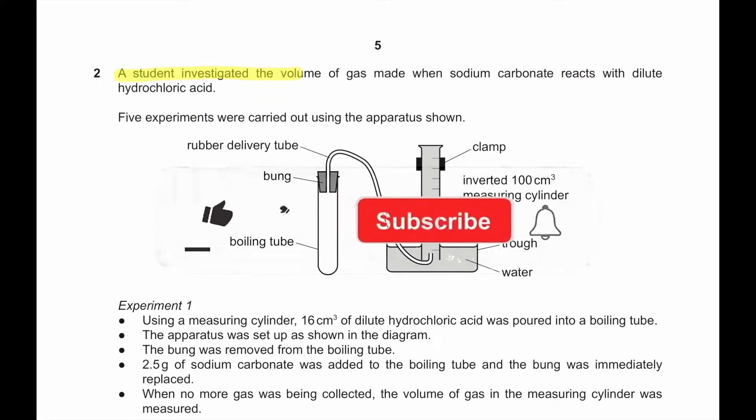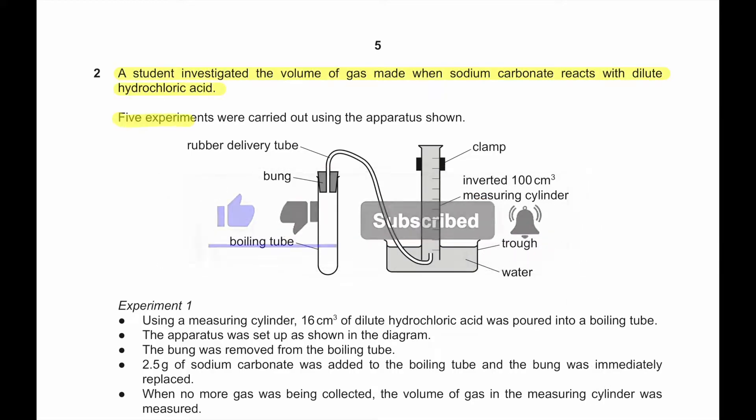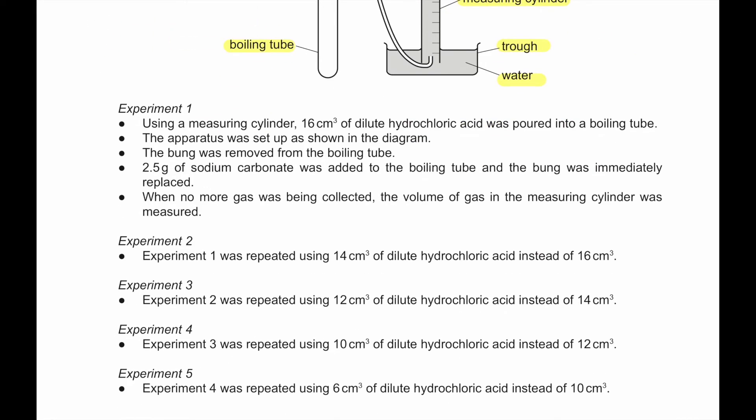Question number 2. A student investigated the volume of gas made when sodium carbonate react with dilute hydrochloric acid. 5 experiments were carried out using the apparatus shown. Rubber delivery tube, there is a bung, then there is boiling tube which is holding the reagents, and then the measuring cylinder is upside down and is clamped. Inverted 100 cm³ measuring cylinder. Trough and then there is water. Experiment 1. Using a measuring cylinder 16 cm³ of dilute hydrochloric acid was poured into a boiling tube. The apparatus was set up as shown in the diagram. The bung was removed from the boiling tube. 2.5 gram of sodium carbonate was added to the boiling tube and the bung was immediately replaced.